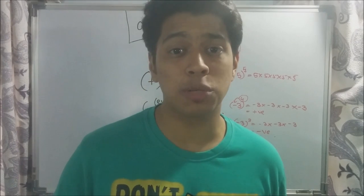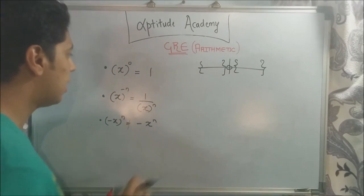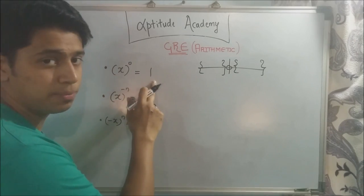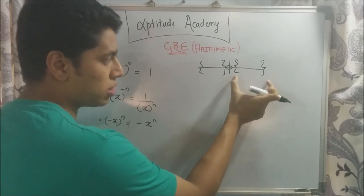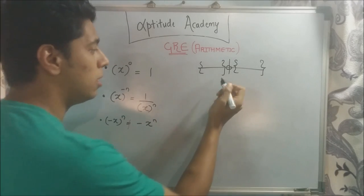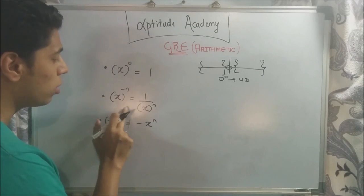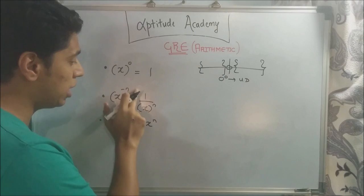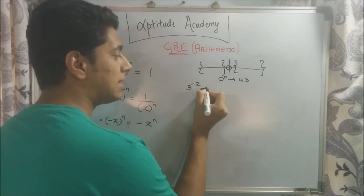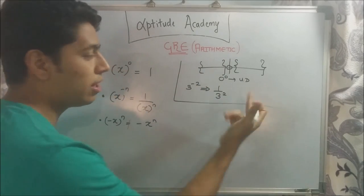If you didn't understand this part, you might want to go watch my first lecture on integers where I've explained it thoroughly. Now, any non-zero integer raised to zero is always equal to one — this holds for all negative and positive numbers, but not zero, because zero raised to zero is undefined. The second thing: if you have a negative exponent, you can convert it into a positive exponent by taking the base to the denominator. So 3 raised to minus 2 is the same as 1 by 3 raised to 2. I'll prove this a little later in the lecture.